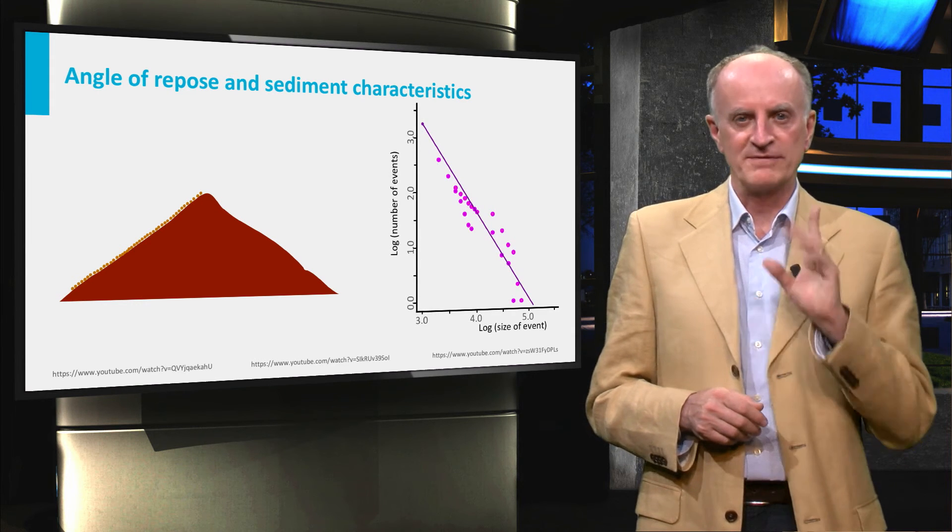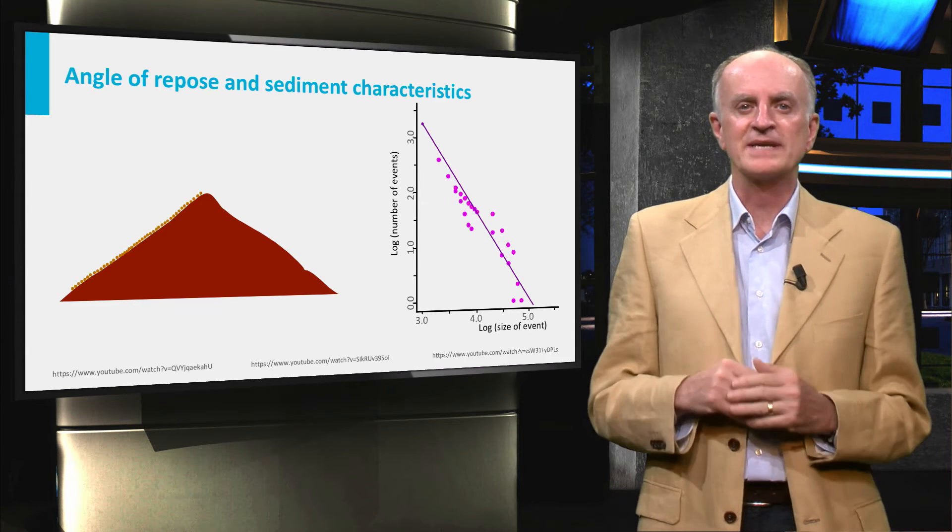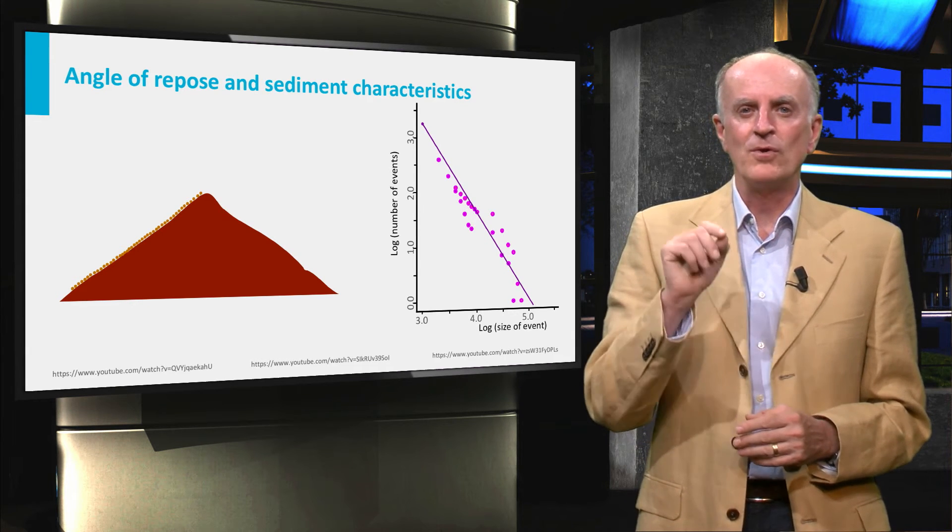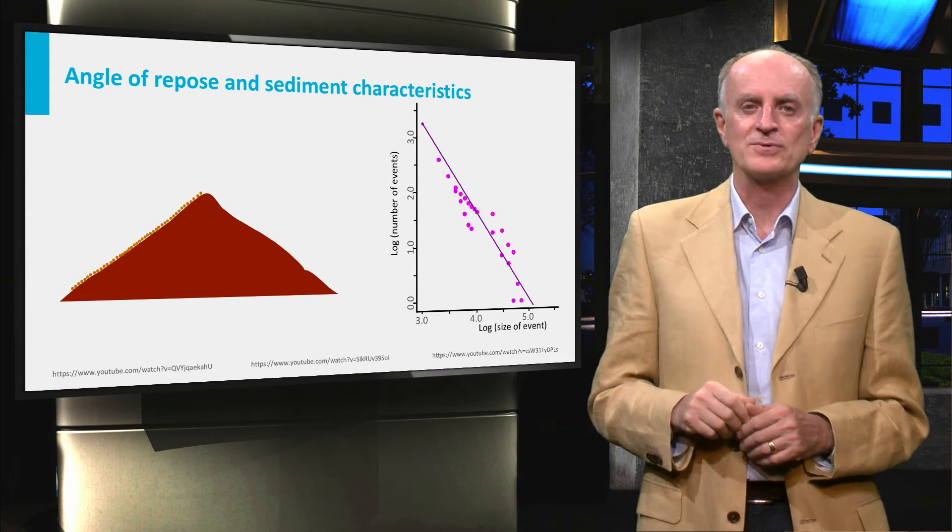If we plot the frequency of events of a specific magnitude on a logarithmic scale, we discover that the points fall all along a line. It seems that the system is able to regulate itself.